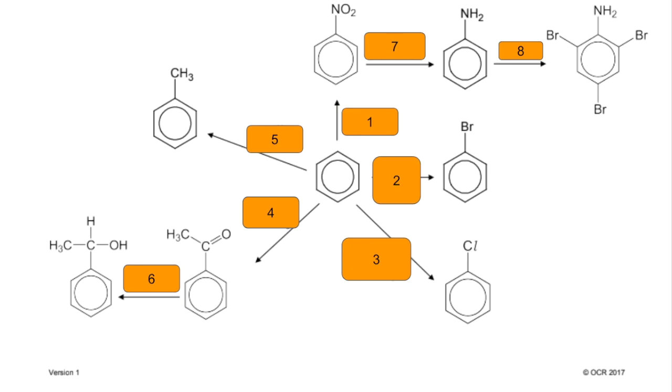Number 1, benzene to nitrobenzene. You react the benzene with concentrated nitric acid and concentrated sulfuric acid, and it needs to be carried out between 50 and 55 degrees C.